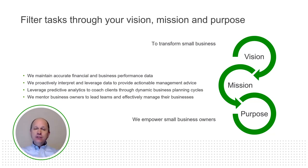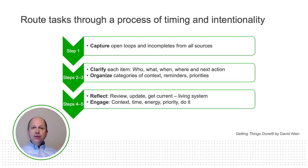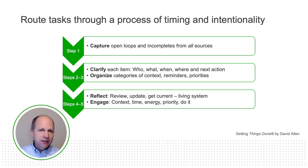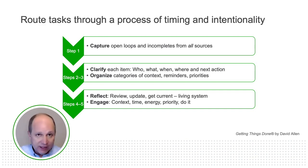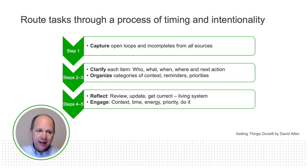The last one is purpose — it should drive every decision you make, like "we empower small business owners." Once you've routed those tasks through the filter of your vision, mission, and purpose, you need to route them through a process of timing and intentionality. Not every task is equal — it's not equal in its value, its prioritization, or its timing, meaning the sequence by which it should be done.